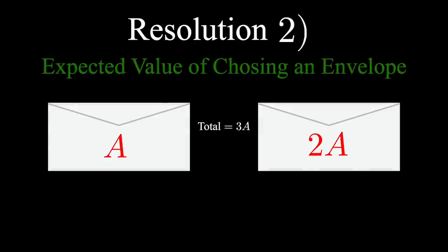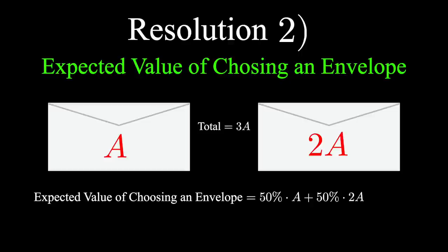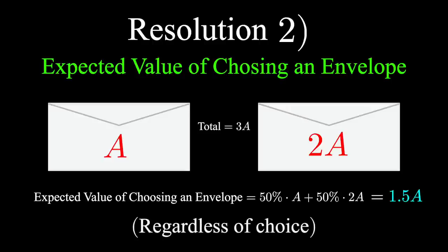Another solution looks at the expected value differently. If one envelope contains the amount a, the other envelope contains the amount 2a, then the expected value of the envelope you choose is one-half times a plus one-half times 2a, which is three-halves a, 1.5a, regardless of which envelope you originally chose. This means, on average, the amount you receive is the average between the two envelopes, which makes sense.